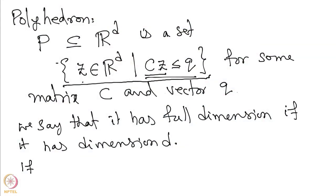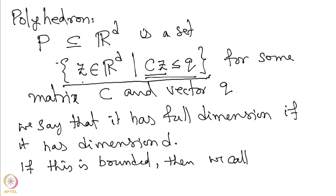If this polyhedron is bounded, we call it a polytope. Polytope is essentially a bounded polyhedron. Because the inequality CZ <= Q does not guarantee that the set is bounded, if the set is bounded we call it a polytope instead of a polyhedron. Polyhedron is the more general term and polytope is used for bounded polyhedra.